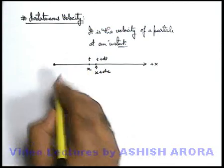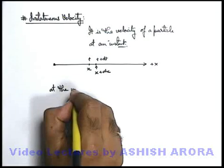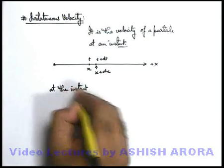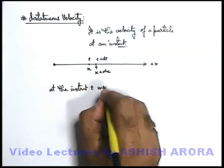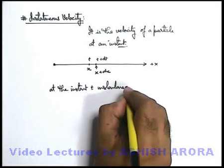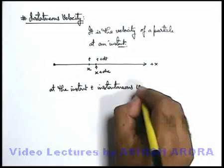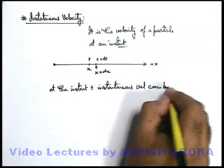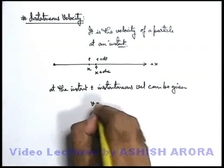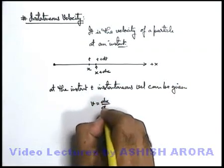So at this time t, or at the instant t, instantaneous velocity can be given as v equals dx by dt.